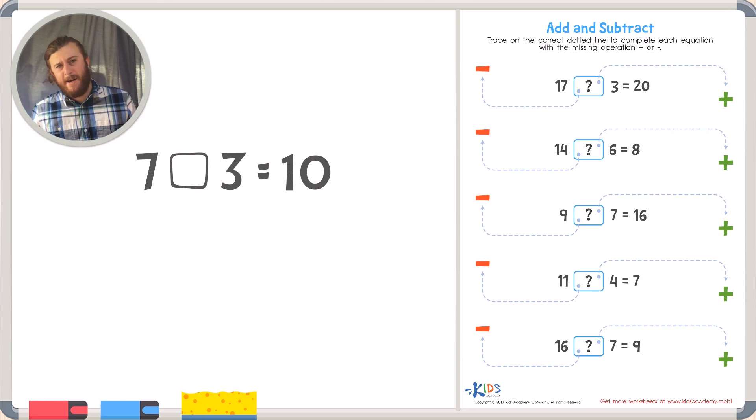Now do we add or subtract to make things grow or get bigger? Well of course we add. So if you see that the first number is smaller than your answer you need to put an addition symbol, and that makes sense because 7 plus 3 equals 10.